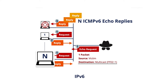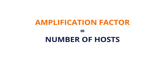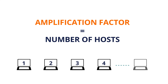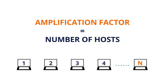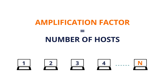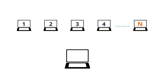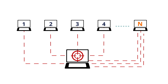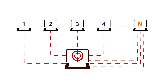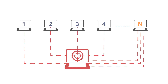In both cases, the amplification factor will be the number of hosts apart from the attacker and the victim. In our examples, the amplification factor is n. If n is big enough, the attack can result in the victim's host being flooded with traffic, slowing it down to the point where it's impossible to function.